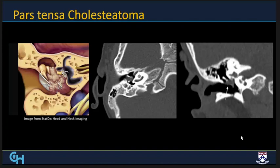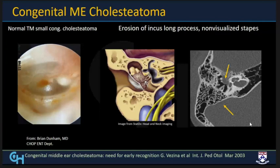Pars tensa cholesteatomas arise from the pars tensa portion of the tympanic membrane and are usually medial to the ossicular chain. Congenital cholesteatomas can occur without history of otomastoiditis episodes, and the tympanic membrane is usually normal — you can see the normal translucent tympanic membrane and a pearly white small cholesteatoma. A striking feature is that since these patients have not had repeated mastoiditis episodes, they have good pneumatization of the mastoid air cells, and may also have aeration of the petrous apex.